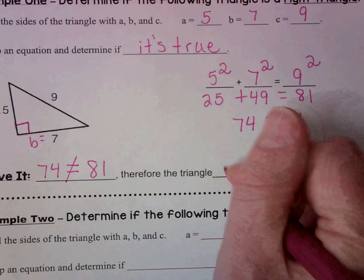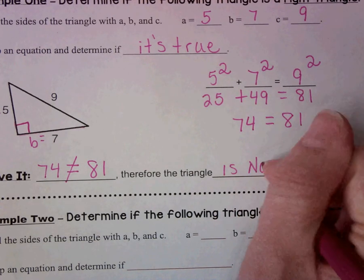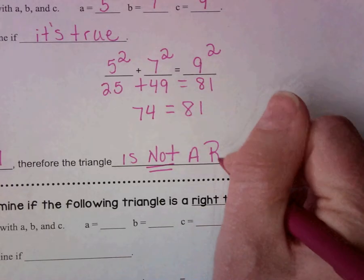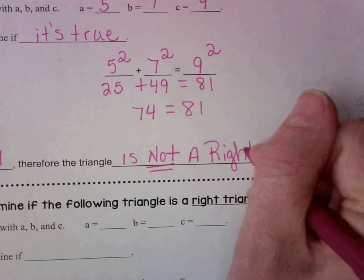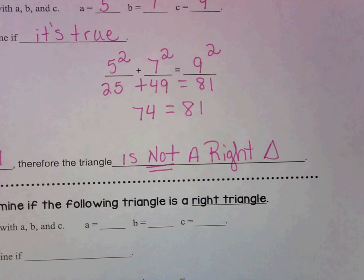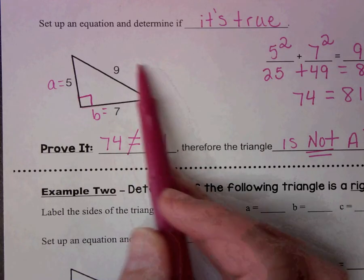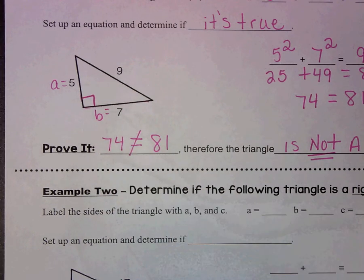Well, 74 is not equal to 81. Therefore, the triangle is not a right triangle. So that didn't work. It didn't come out to be equal. So we did this. These sides do not form a right triangle. It looks like it, but looks can be deceiving, right?